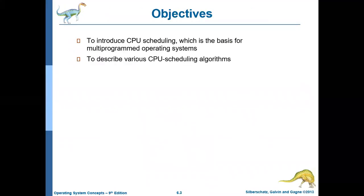The objective of this particular topic is to introduce CPU Scheduling. CPU Scheduling is the basic thing which we do in a multi-programmed operating system, in a multi-programmed environment. We will understand what is done by CPU Scheduling, why it should be done, and how it improves CPU utilization. The second objective is to discuss the various CPU Scheduling algorithms.